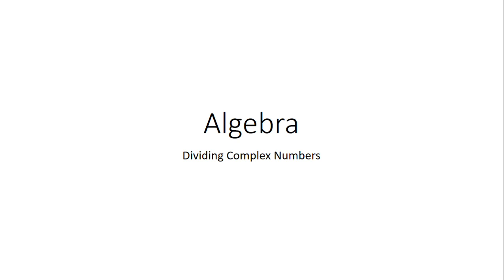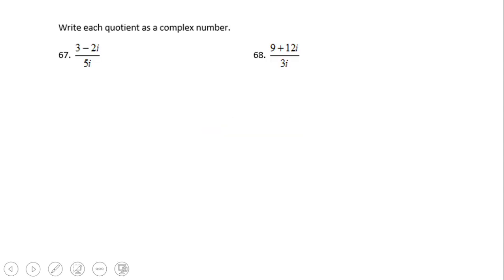Welcome or welcome back on C-Square. In this video clip we're going to talk about dividing complex numbers, and we'll look at these two problems, 67 and 68. In problem 67, we have to divide a complex number 3 minus 2i, that's 3 minus 2i divided by 5i.